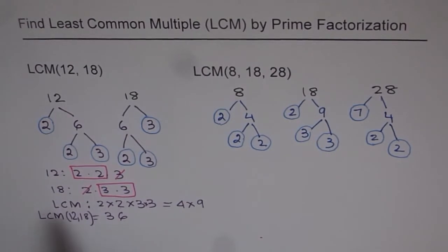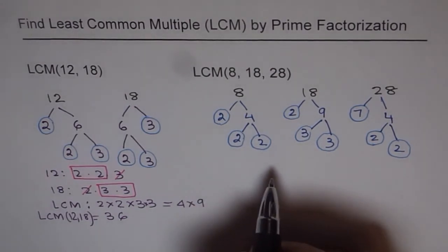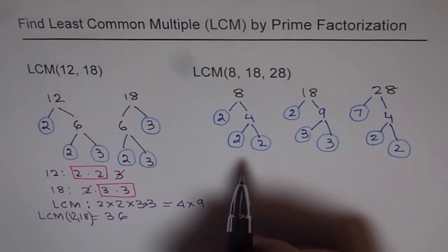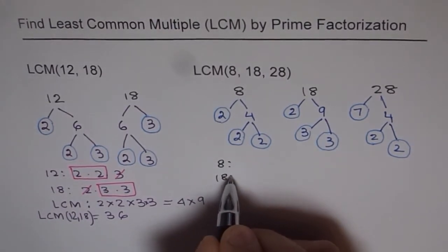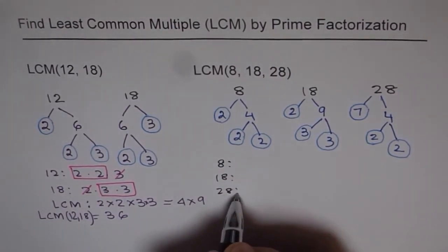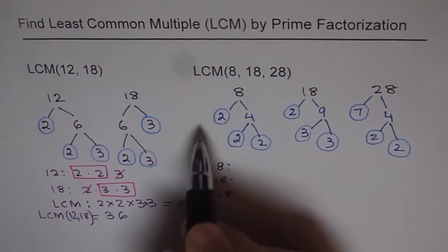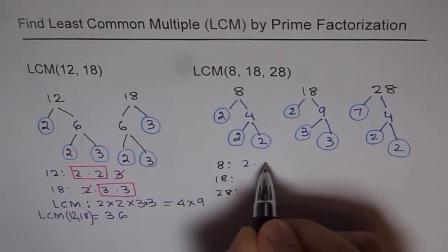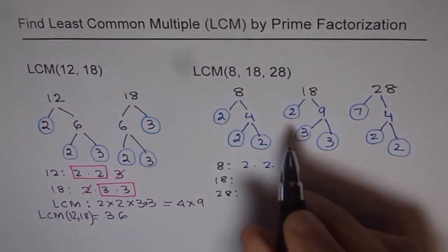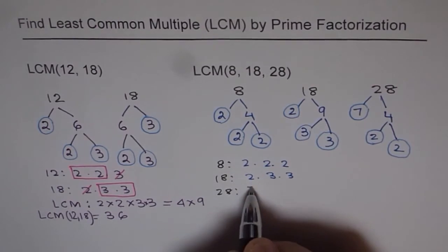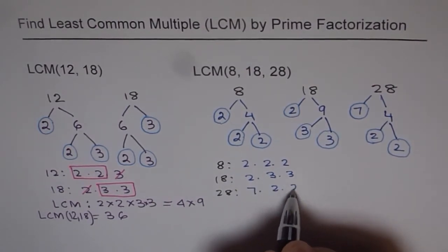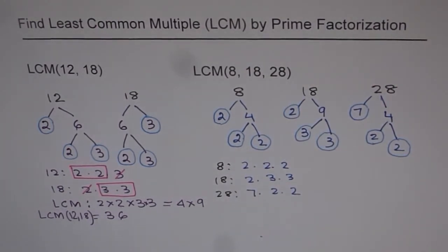So, we'll follow the step of listing all the prime factors of each number. Let's start with 8. So, there are 3 numbers, 8, 18 and 28. List all the prime factors. For 8, it is 2 times 2 times 2. For 18, it is 2 times 3 times 3. And for 28, we have 7 times 2 times 2. Now, as you see, the first step is prime factorization.